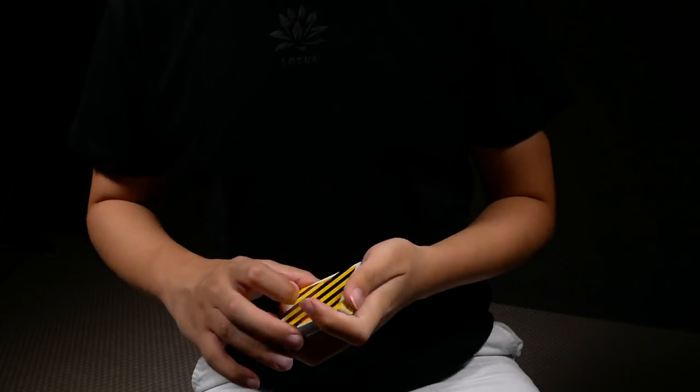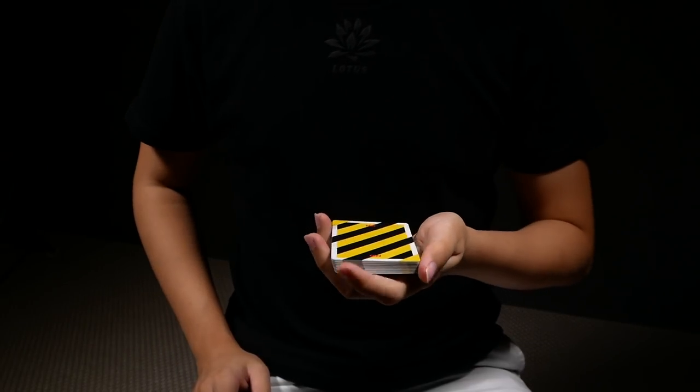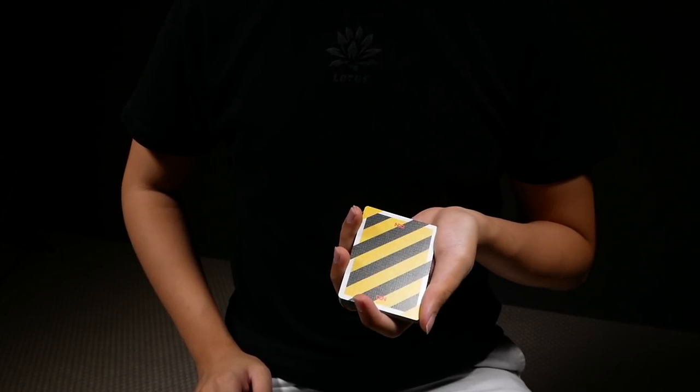So let's take a look at this move from another angle because a lot of the movements happen under the deck. Alright, so to begin, start in dealer's grip.